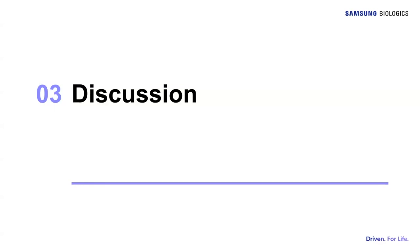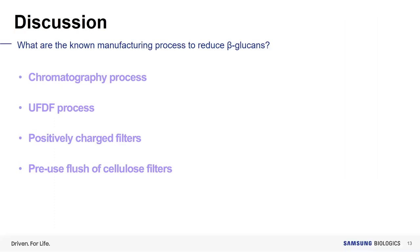It is important to solve unexpected false positive reactions. There are four types of manufacturing processes to reduce beta-glucans. First, chromatography processes — such as ion exchange, hydrophobic interaction, or protein A affinity chromatography — can reduce beta-glucans. Process details such as flow rate, bed height, buffer volume, and conductivity may impact beta-glucan removal. Studies show that bind-and-elute modes are usually effective, while flow-through modes are usually not effective.